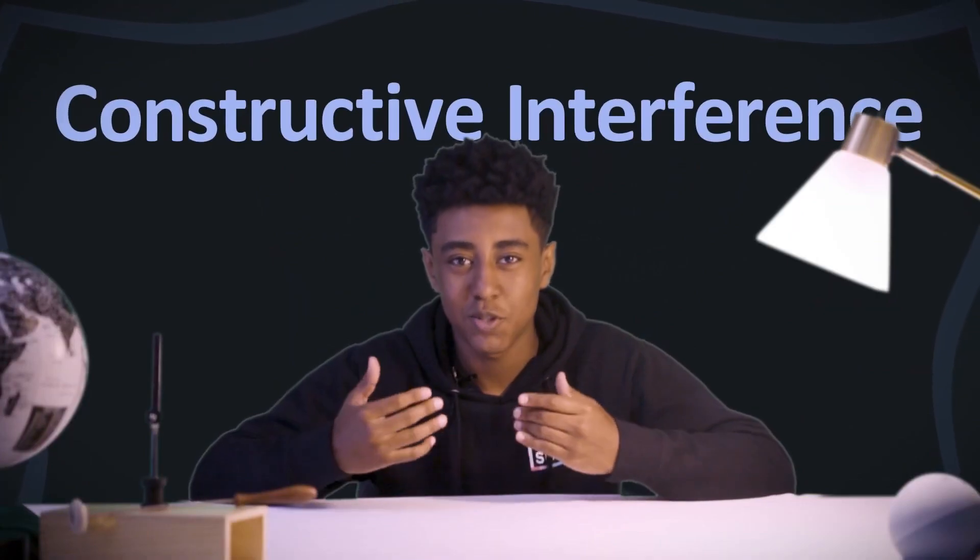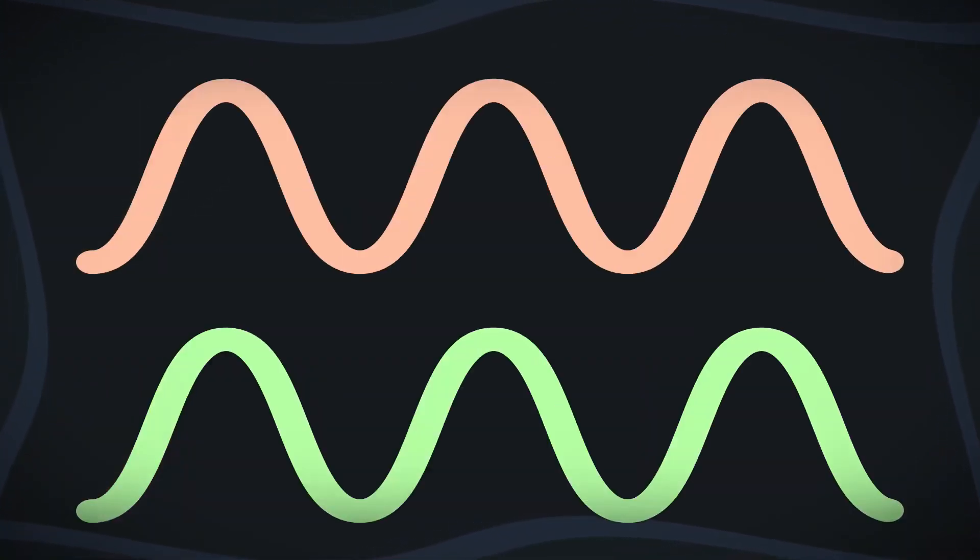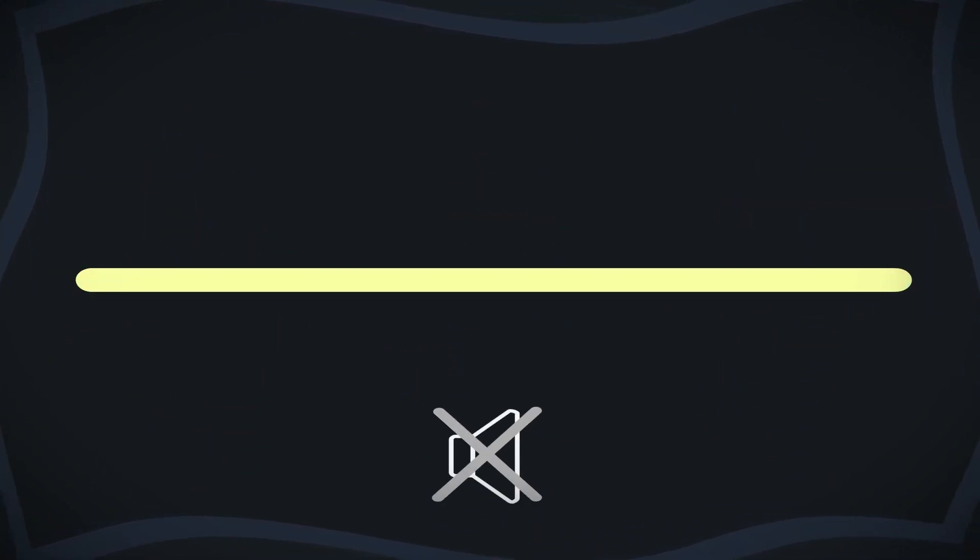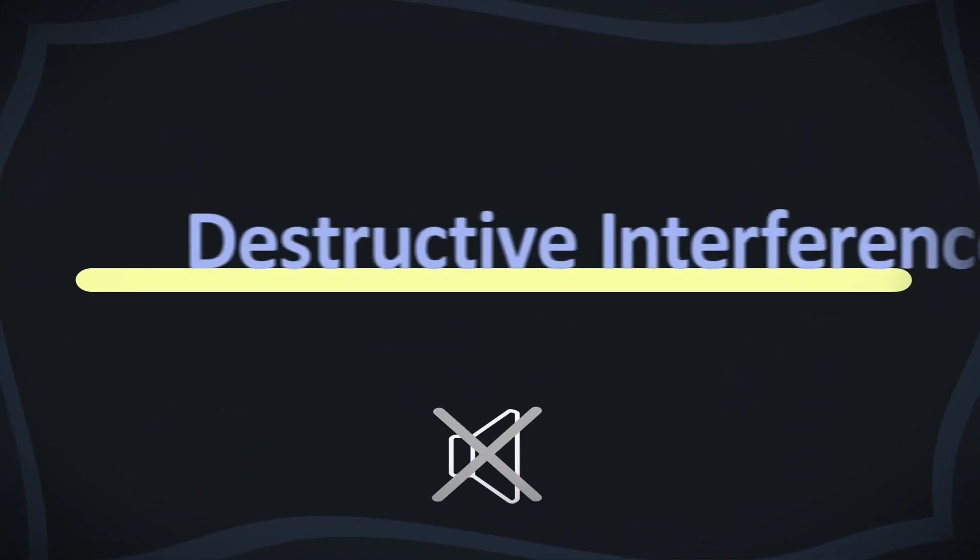This amplification of sound is called constructive interference. If we took these sound waves and shifted one so that the peaks match the troughs, then the result would be a sound wave of amplitude zero. And this is called destructive interference.